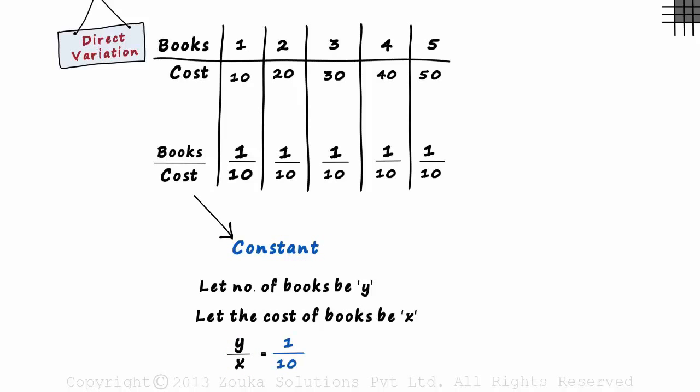If we multiply both sides by x, we get y is equal to 1 by 10x. This is another way in which direct variation is studied. Y is equal to kx where k is a constant.